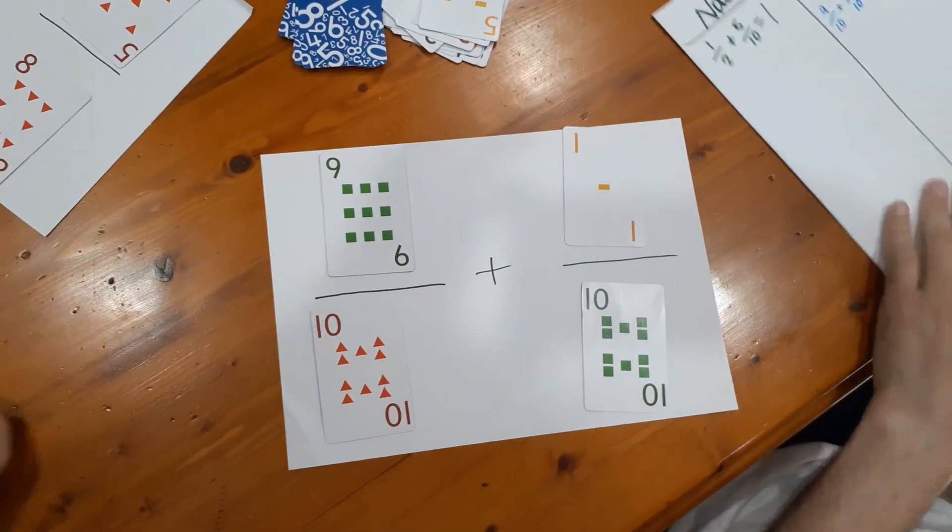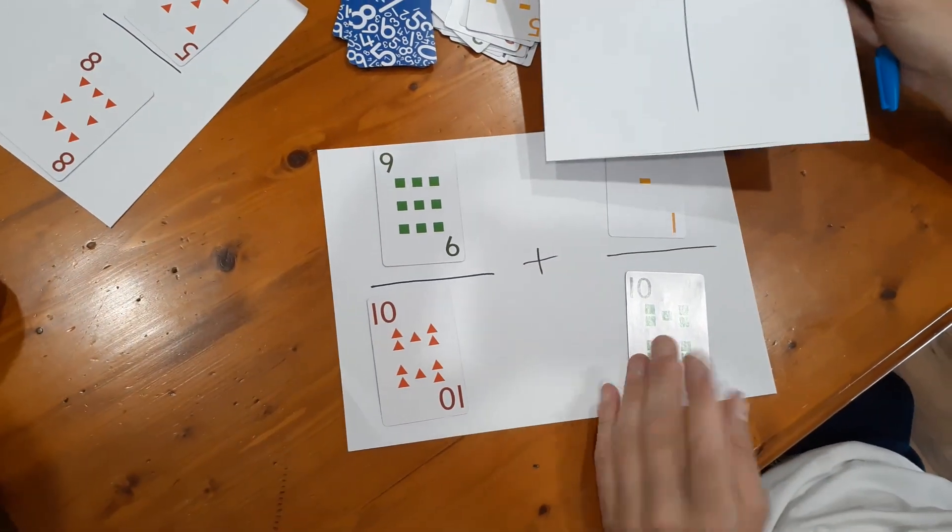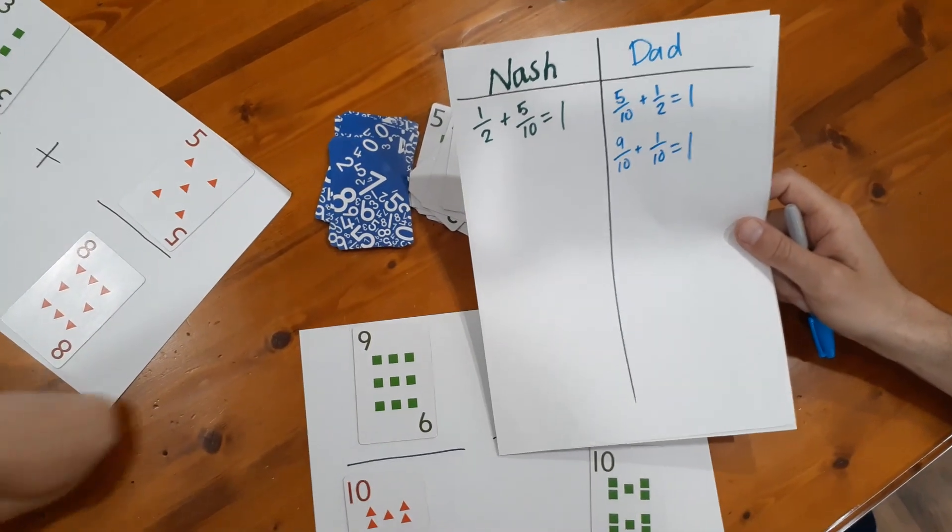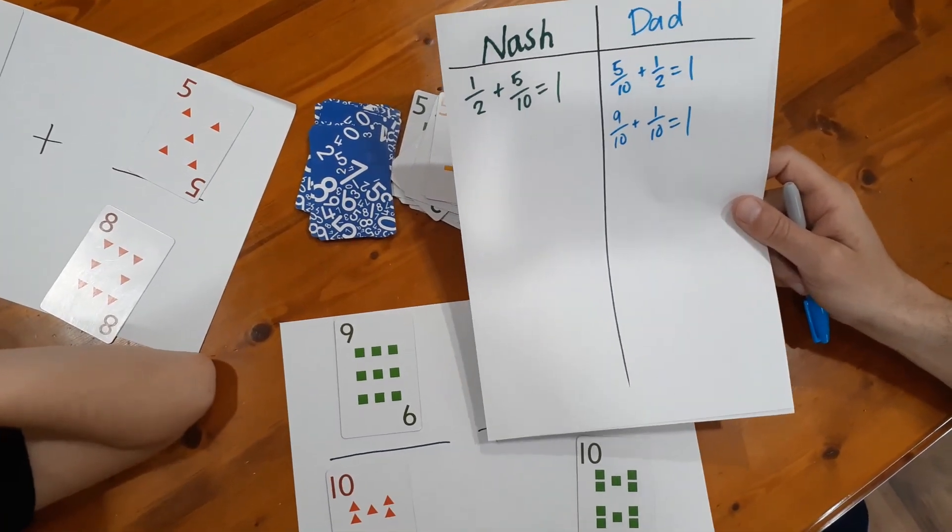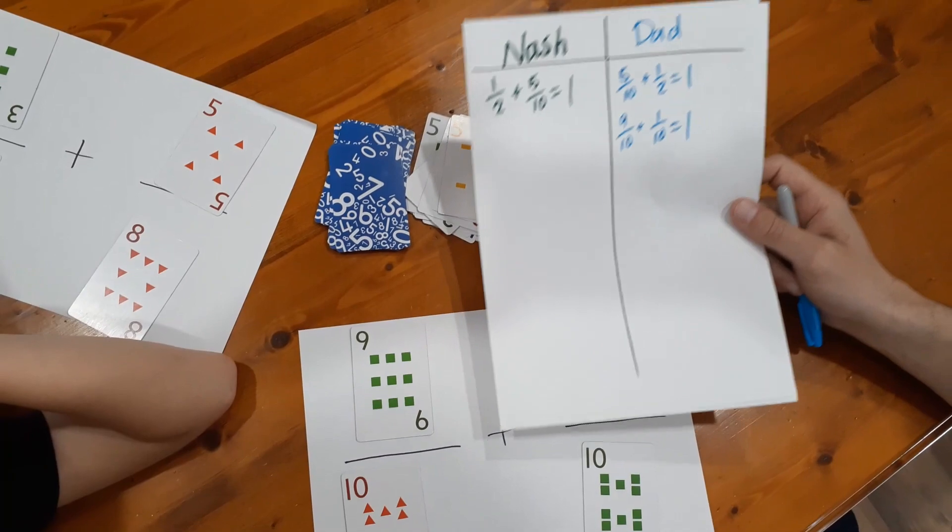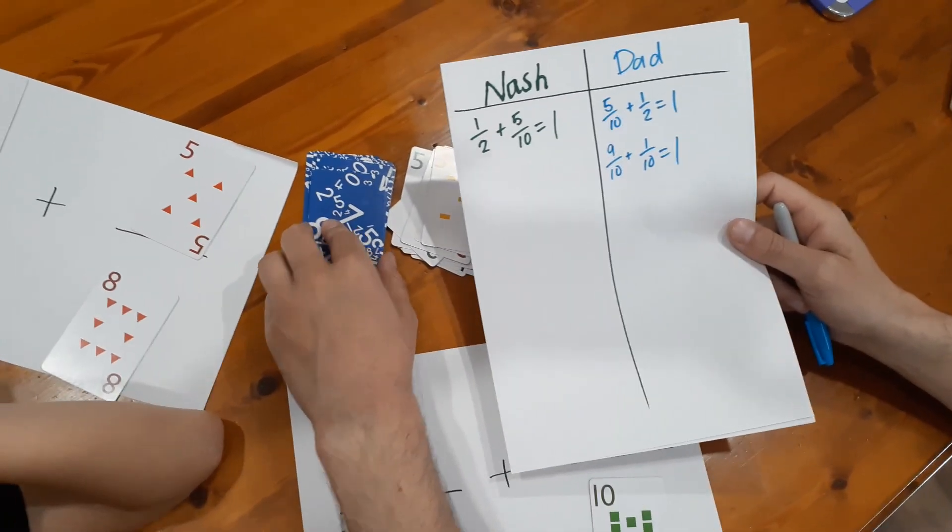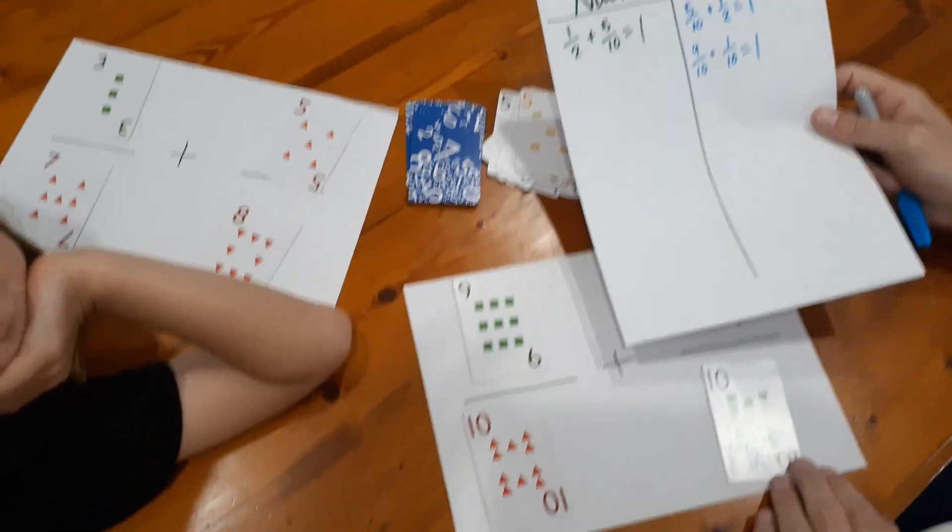Now the game continues like this. The rule Nash and I made is we make it continue until you get five equations. First person to get five equations is the winner. I mean that's an arbitrary spot we chose to stop. You could also make it that when the deck runs out, whoever's in front is the winner. But we play that if the deck runs out, you shuffle it up and you keep going.